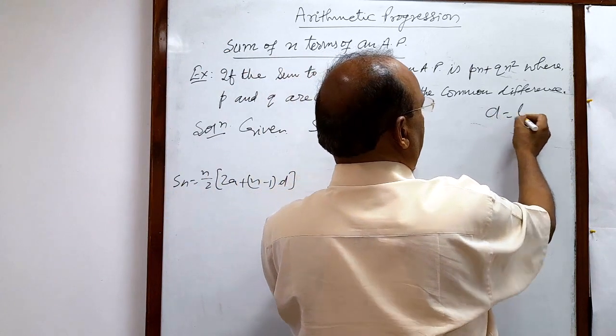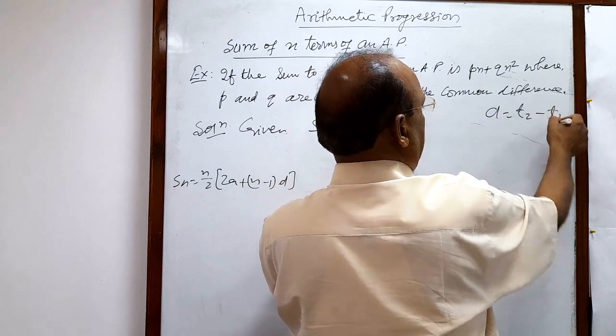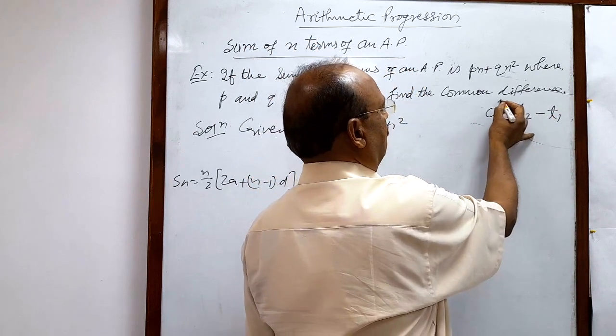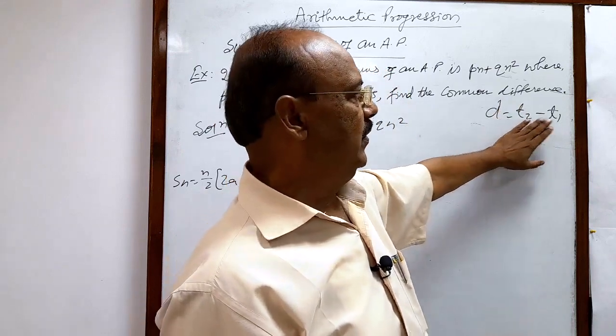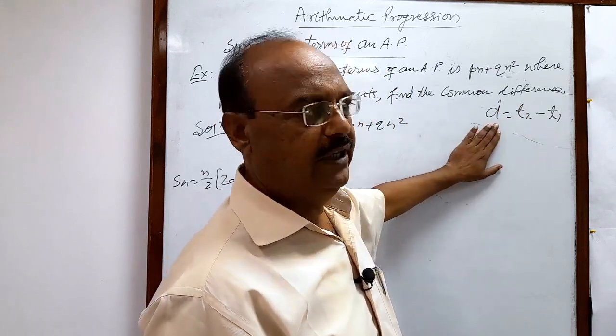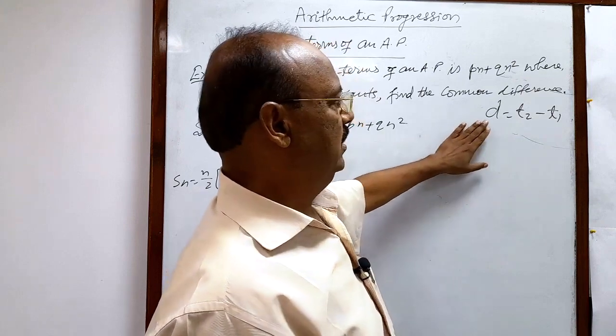d will be equal to t2 minus t1. d is equal to t2 minus t1. Second term minus first term will give the value of d. We can get d in this way.